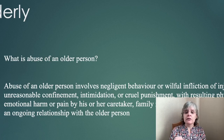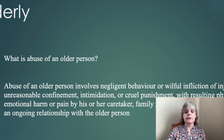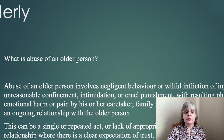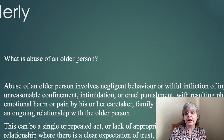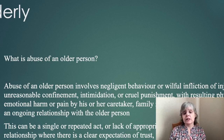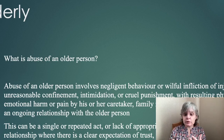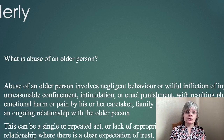So it's negligent behaviour, infliction of injury, unreasonable confinement, intimidation, punishment, physical and emotional harm by the caretaker involved. This can be a single or repeated act, or a lack of appropriate action, and it occurs when there's an expectation of trust — you expect that the person who is being abusive should actually be kind and caring, but instead they're causing harm and distress to the older person.